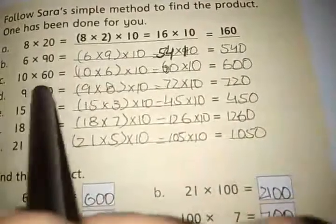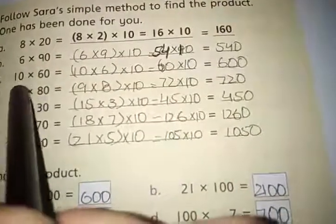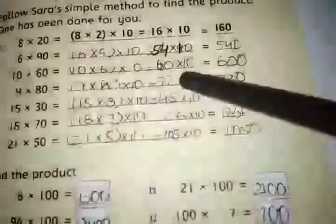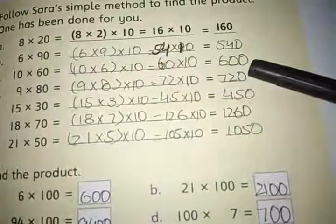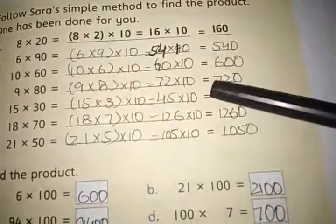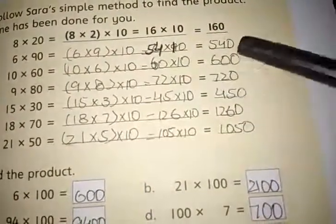Number C is 10 multiplied by 60. First of all, 10 multiplied with 6. 10 sixes are 60. Then 60 multiplied by 10. And 10 sixties are 600.